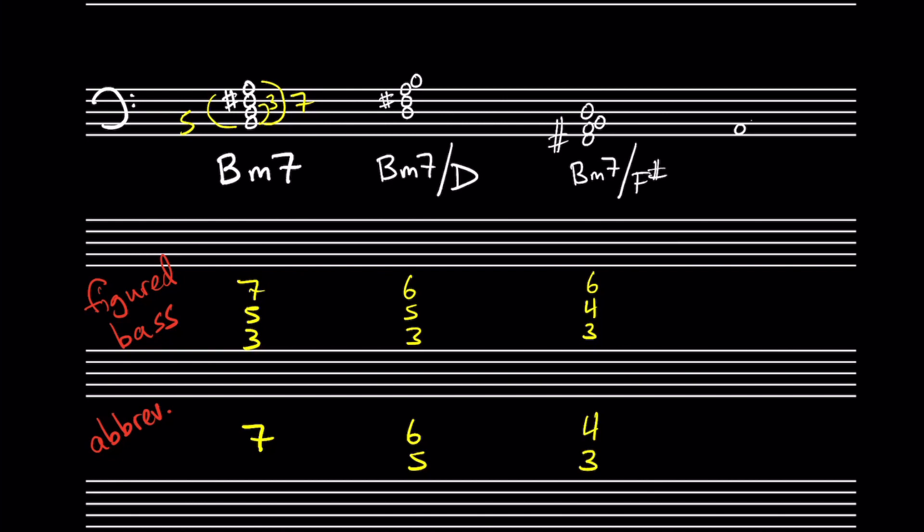Finally, there is a third inversion of seventh chords, where the seventh of the chord is in the bass. The lead sheet notation for this chord would be Bm7 slash A. The full figured bass is 6-4-2, and the abbreviated figured bass is just 4-2.